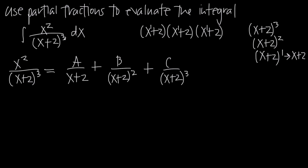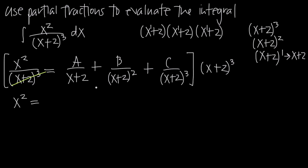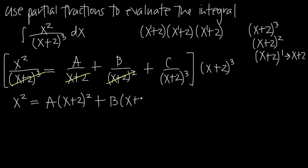That's how we do the decomposition for any repeated linear factor — the constants are A, B, and C because they're linear factors. Now we simplify by multiplying both sides of our equation by the denominator x plus 2 to the third power. That cancels this denominator completely, leaving us with just x squared on the left hand side. On the right we get A times x plus 2 squared, plus B times x plus 2, and then the entire x plus 2 cubed cancels leaving us with just C.